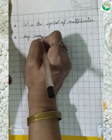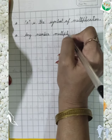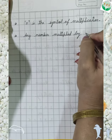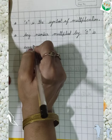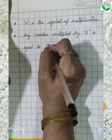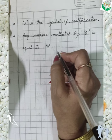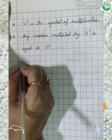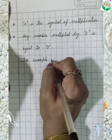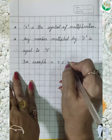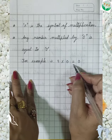Next fact: Any number multiplied by 0 is equal to 0.